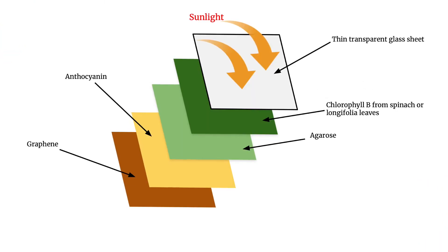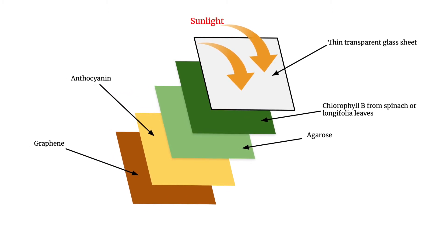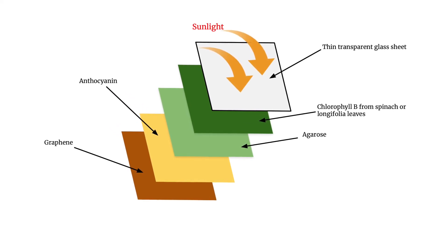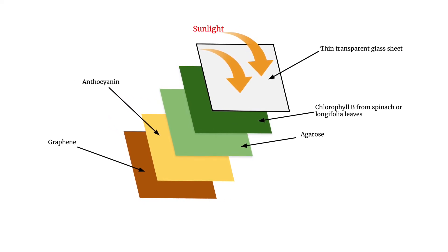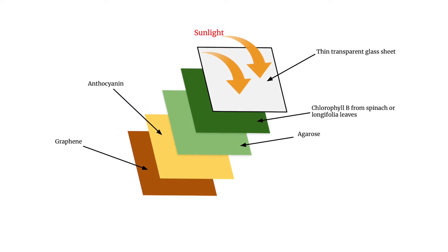EnerArc consists of a thin transparent glass sheet, chlorophyll beef from spinach or longifolia leaves and anthocyanin for absorbing a wider spectrum of light. It consists of agarose and graphene for a 10% increase in thermal conductivity.